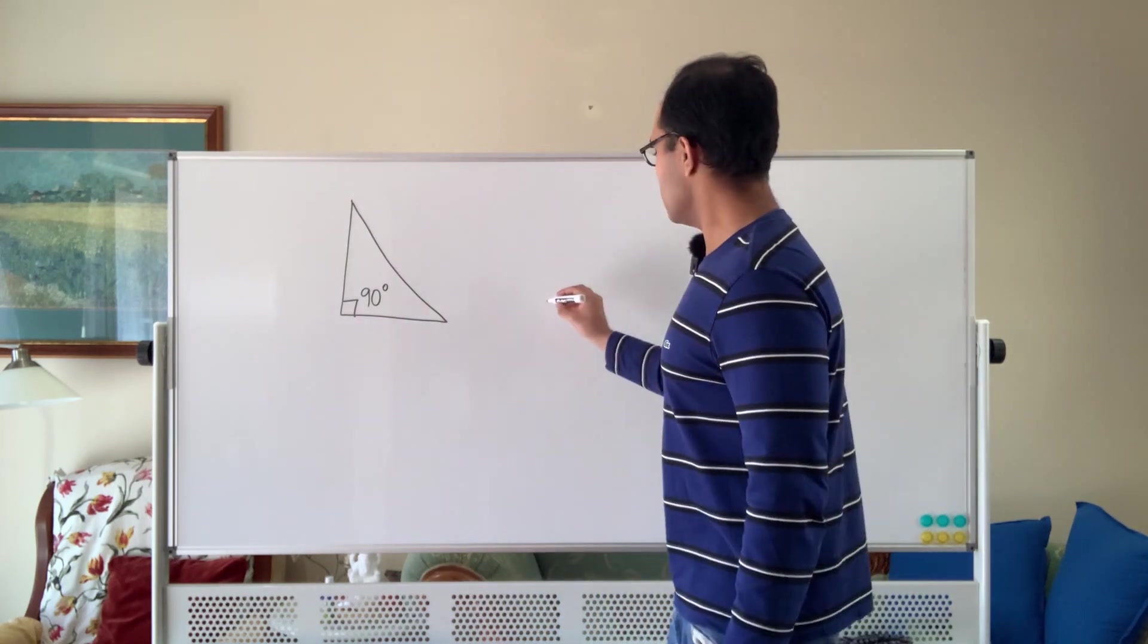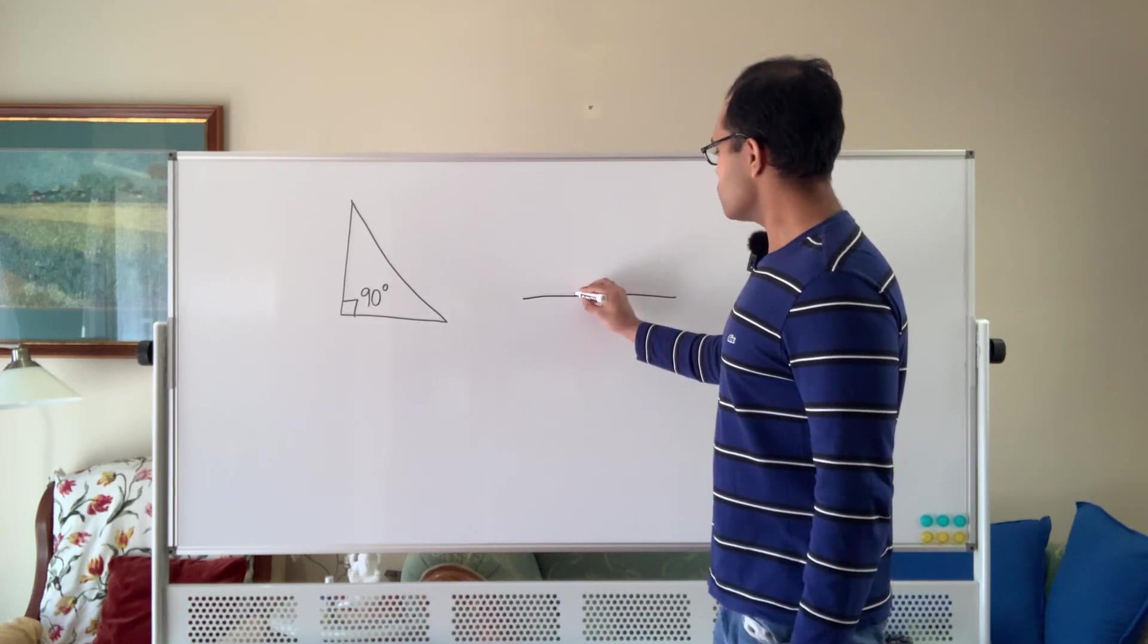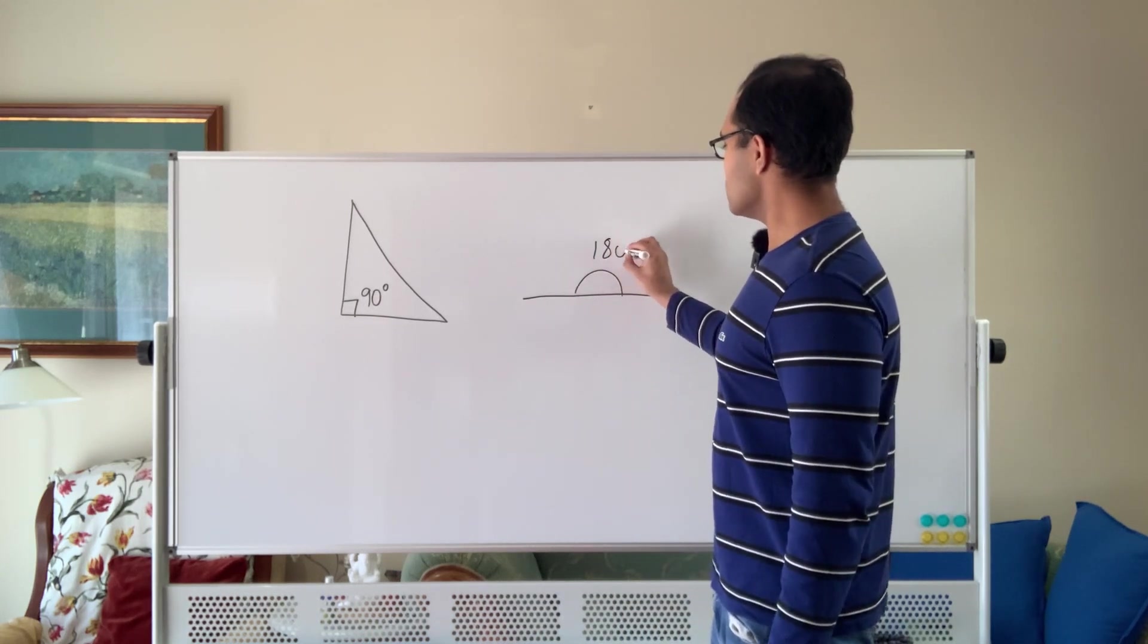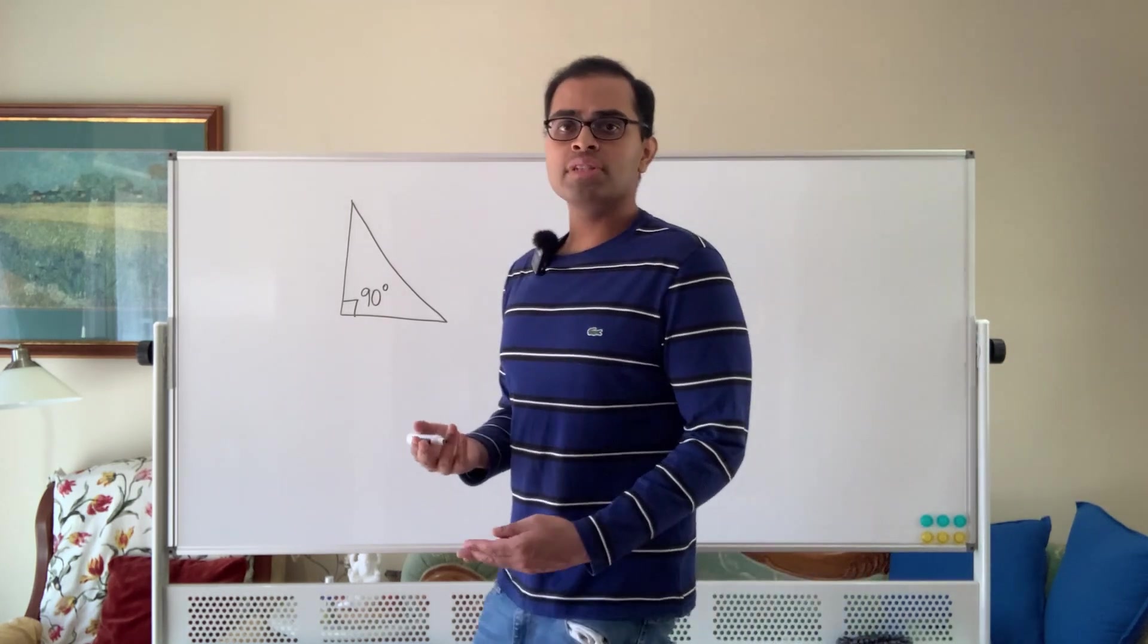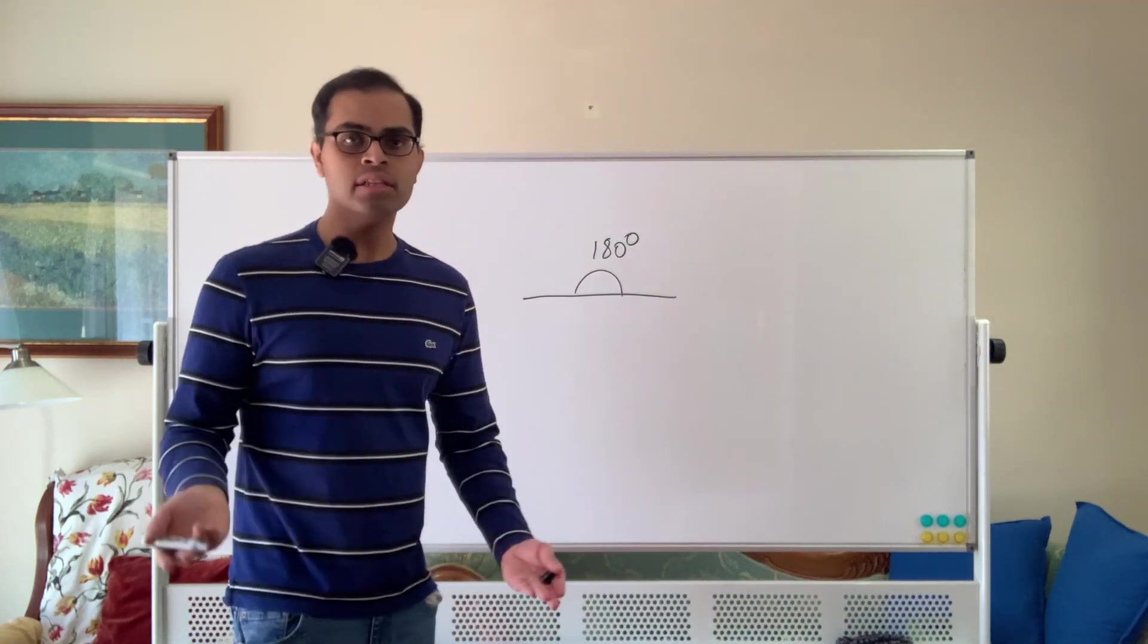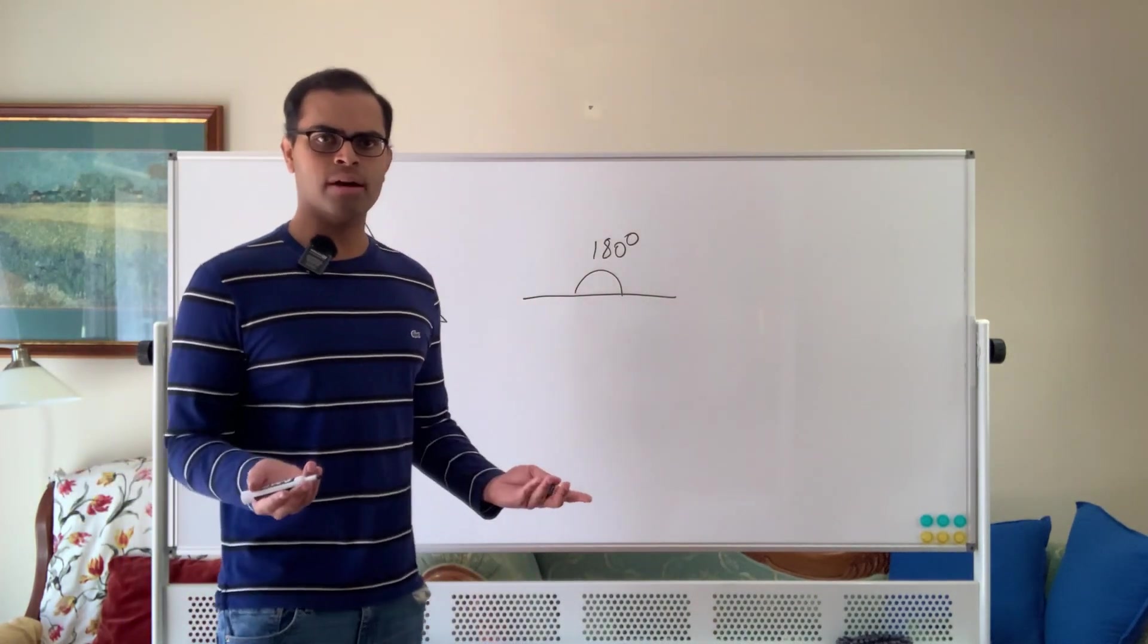And similarly, an equivalent question is why do we say the angle of a straight line is 180 degrees? So in that case, we say that the sum of the angles of a triangle is 180 degrees, but why 180? Why not any other number?